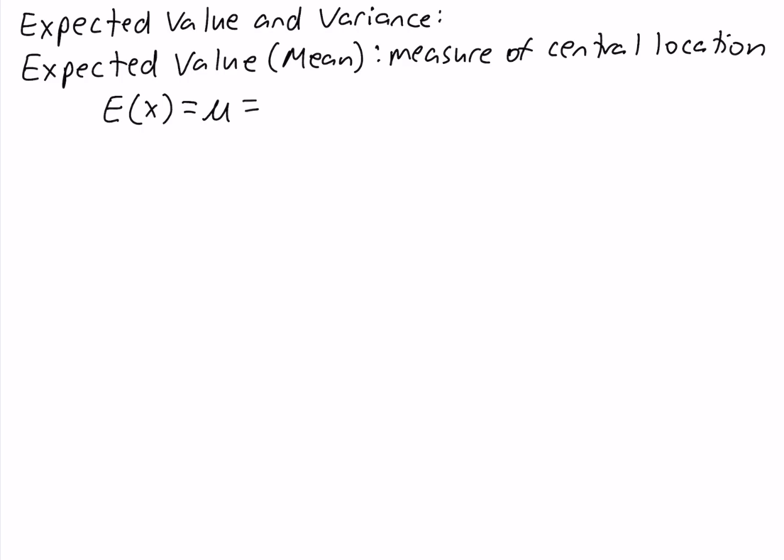The expected value is equal to the sum of x times f of x, where x is the random variable and f of x is the probability function. So we're summing the product of the values of the random variable and the corresponding probabilities.